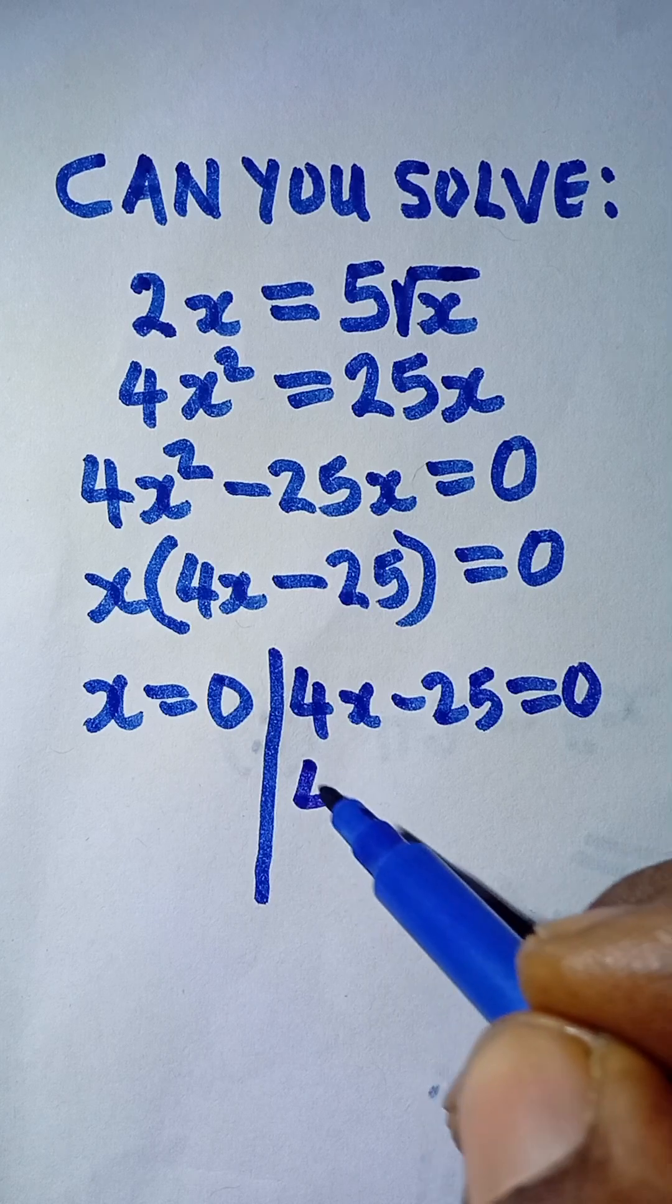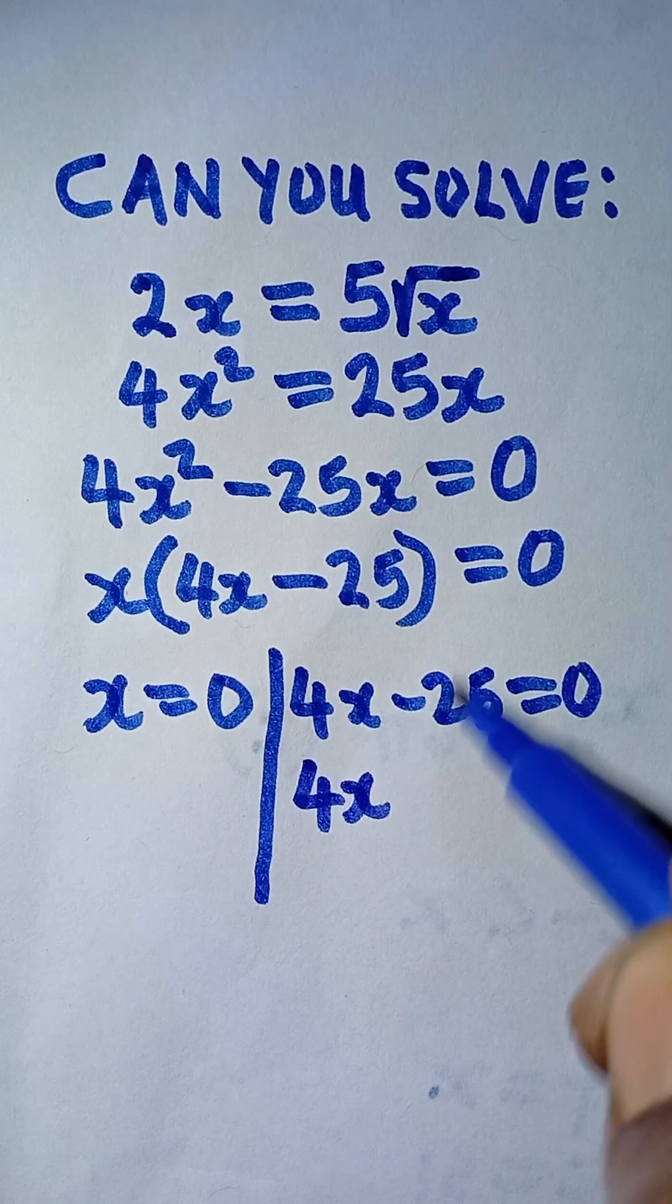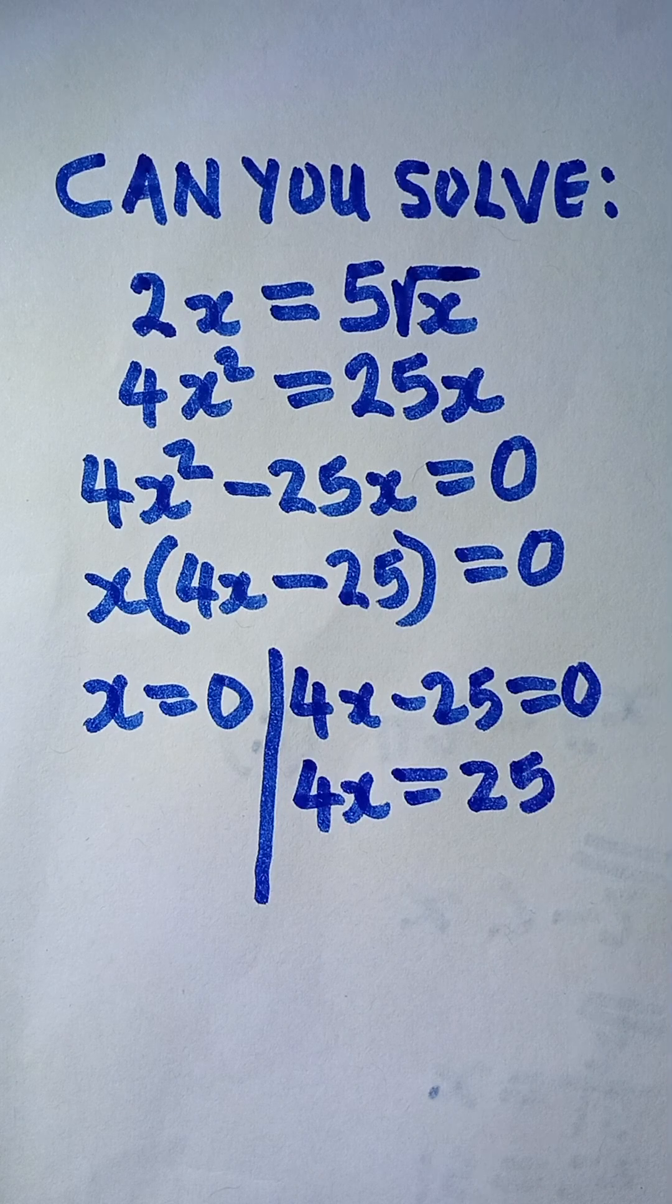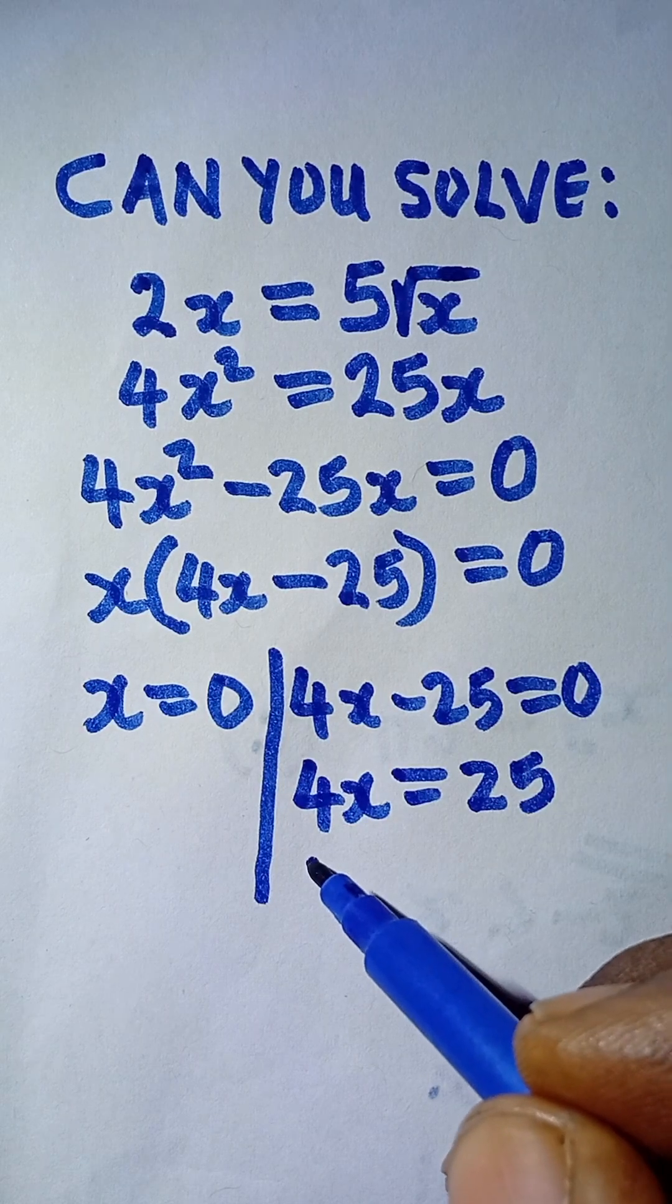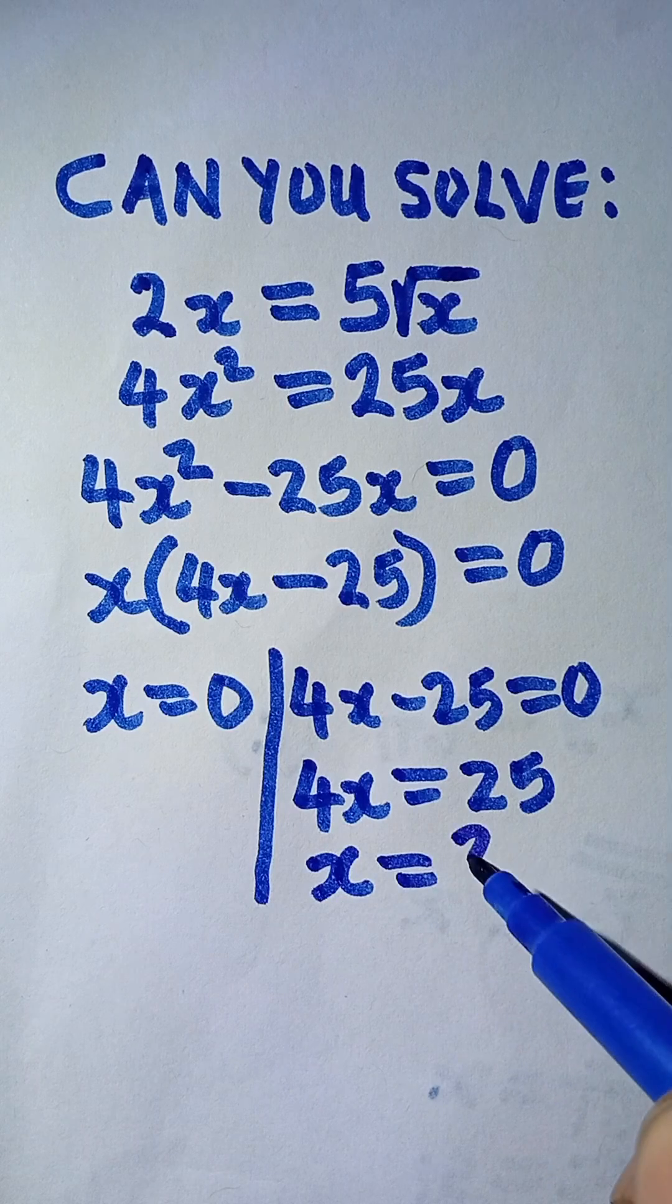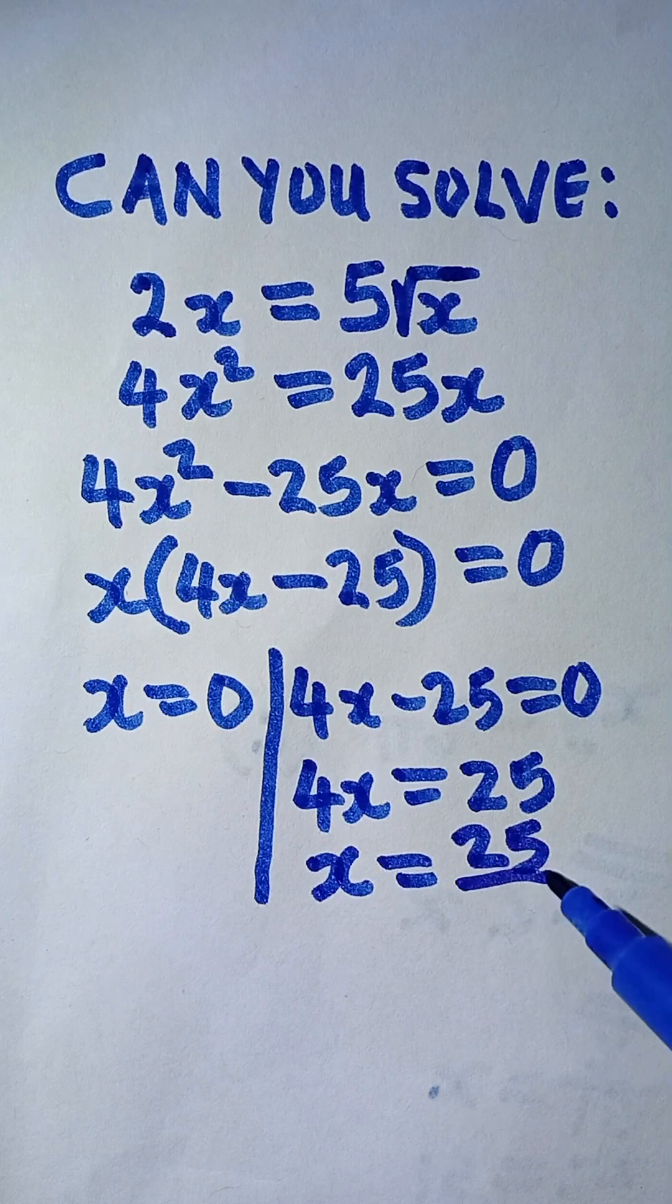If I take the minus 25 to the other side, it becomes positive 25. The 0 means nothing, so we leave it. When I divide both sides by 4, I have x equals 25 over 4.